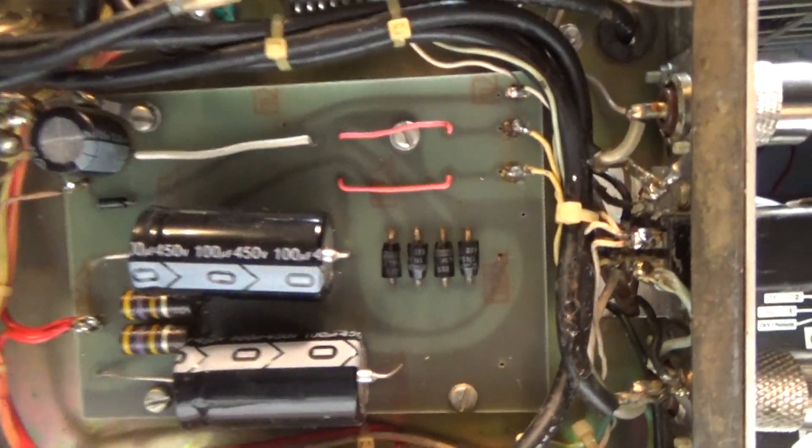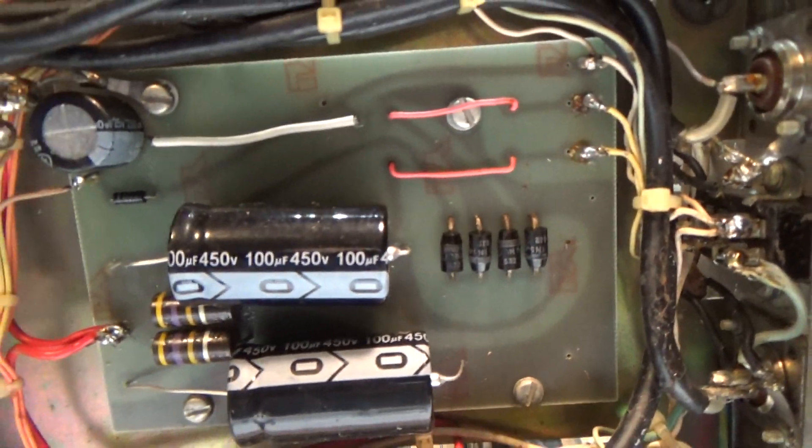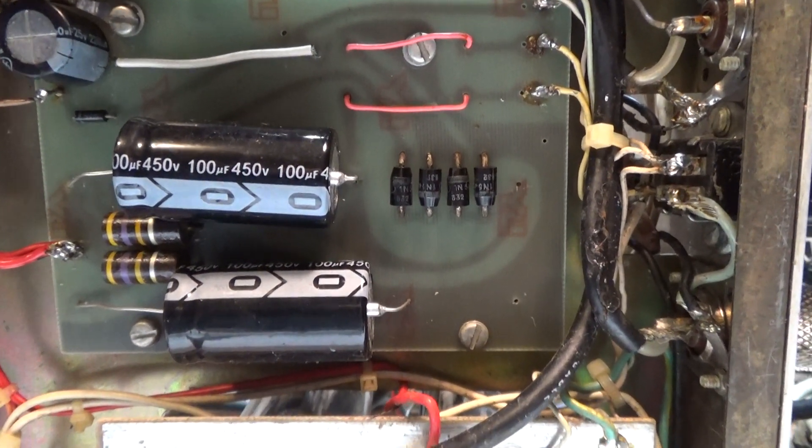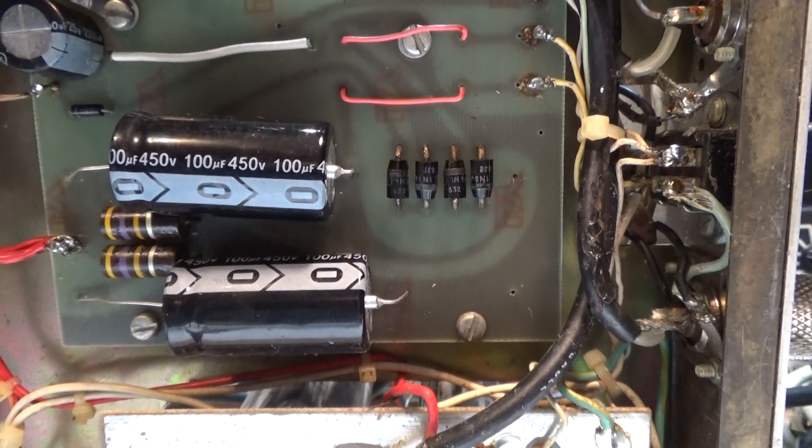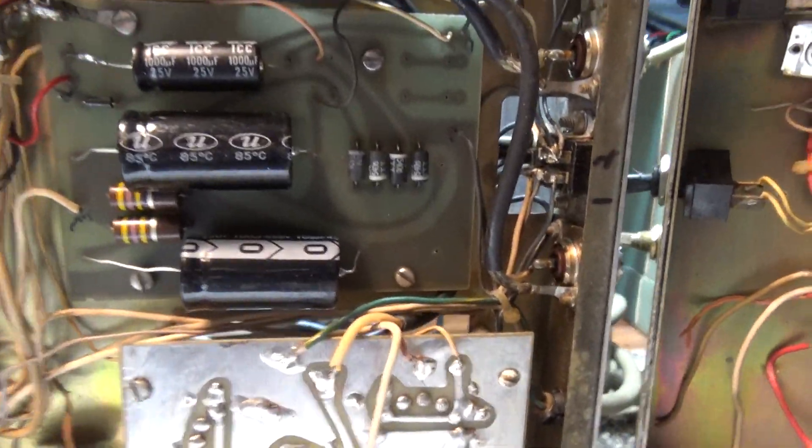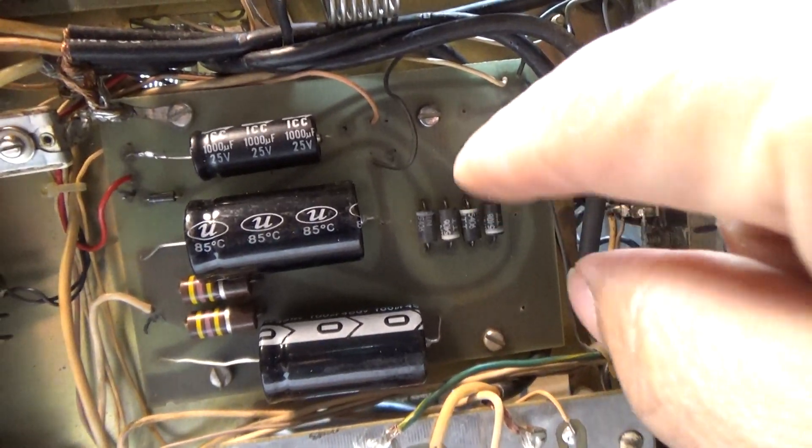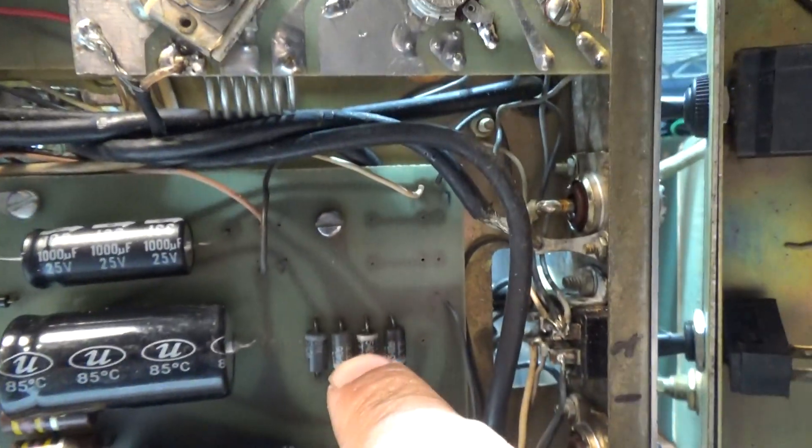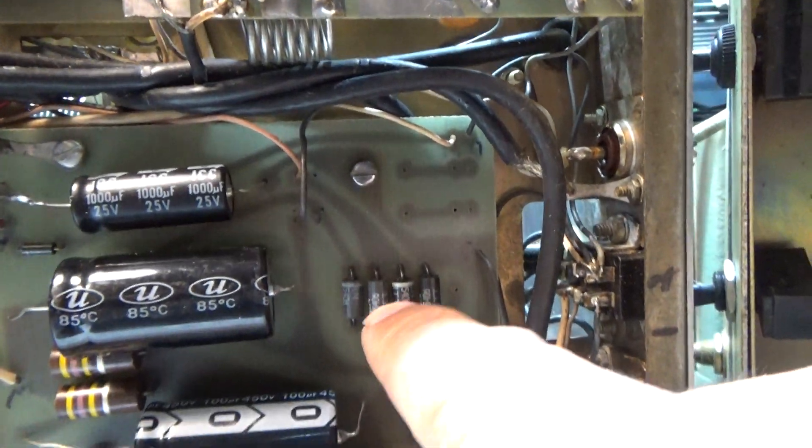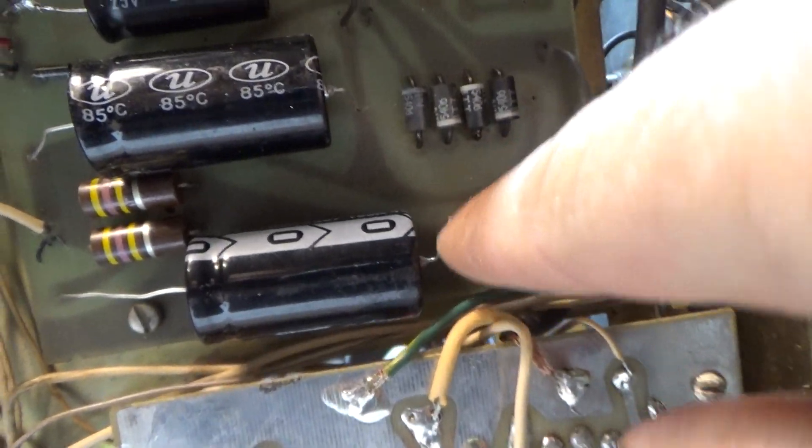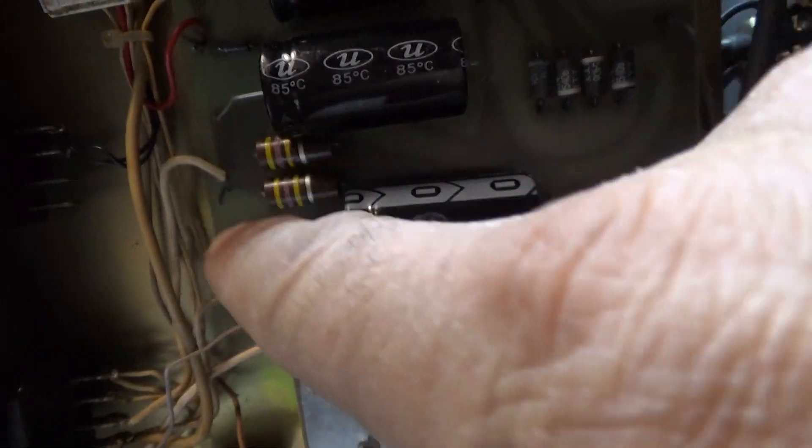Now I didn't find any RF decks that were any different than what you see here as far as the high voltage goes. They all use that low voltage transformer with the voltage doubler. The AC comes in the middle of these two diodes here, and then the other line of the AC comes in this black wire here and it goes to the middle of these two caps here.